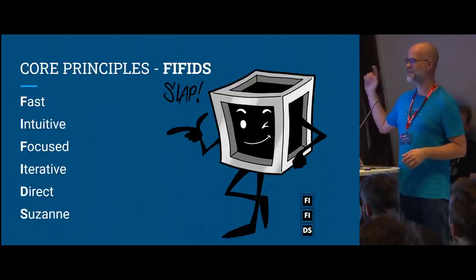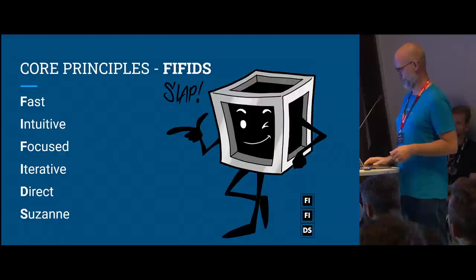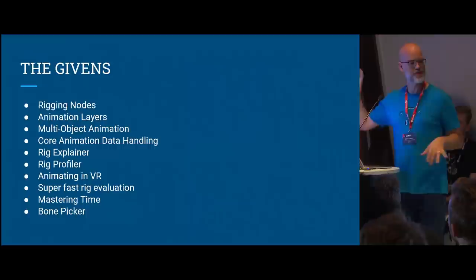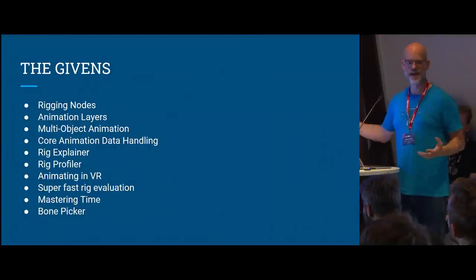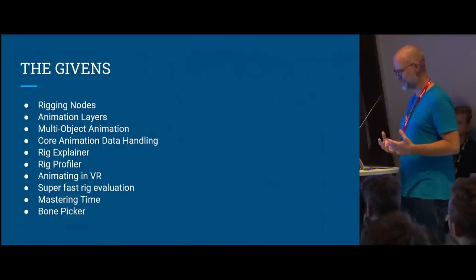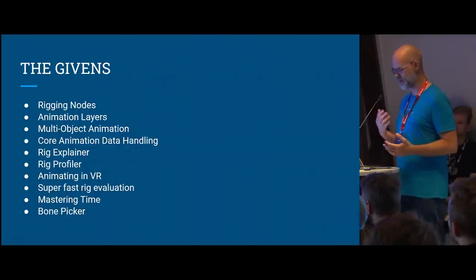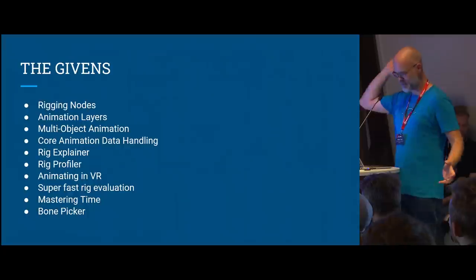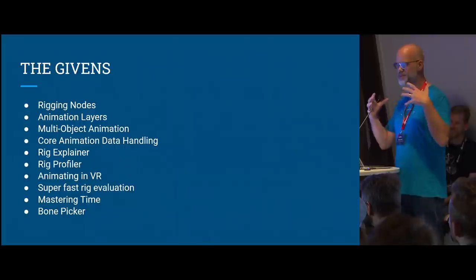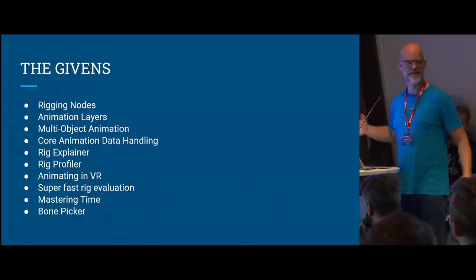So we've seen fast, intuitive, focused, iterative, direct, and Suzanne — a.k.a. FIVIDS, because one fivid is never enough. Before people ask questions, here are the givens: rigging nodes, animation layers, easier multi-object animation, improved core animation data handling, rig explainer, profiler, animating in VR, super fast rig evaluation, mastering time, sculpting animation data including large buckets of mocap data, and simpler things like bone pickers.